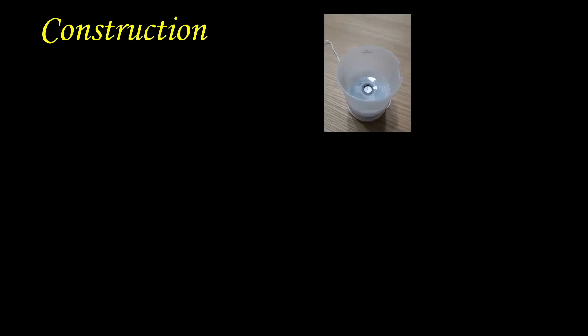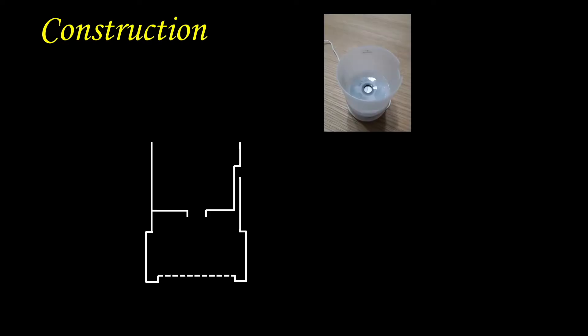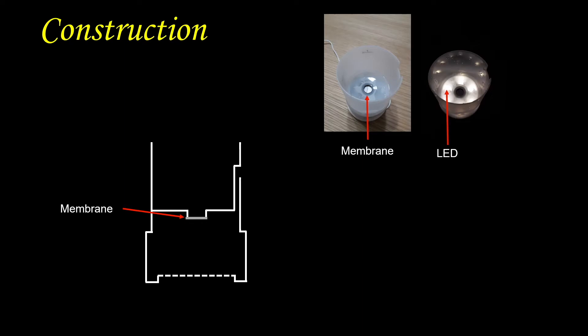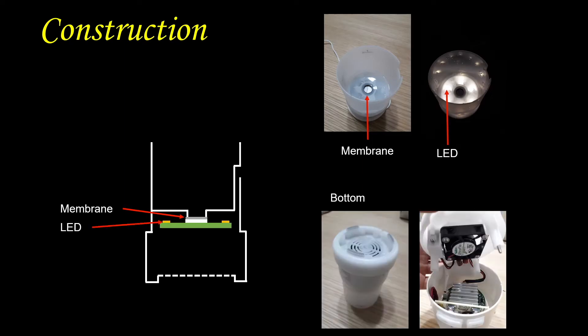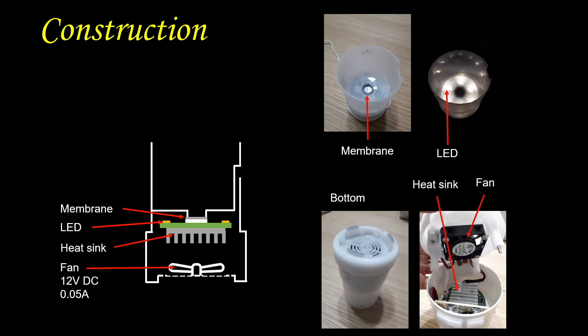First, we'll look at the construction of the humidifier. If you open the cover, we will see a plastic holder with a membrane in the middle. There are LED lights underneath the plastic. If we turn the humidifier around and open the bottom, we will see a heat sink connected to electronic parts. There's also a fan at the bottom that runs on 12V DC with a current of 0.05A.